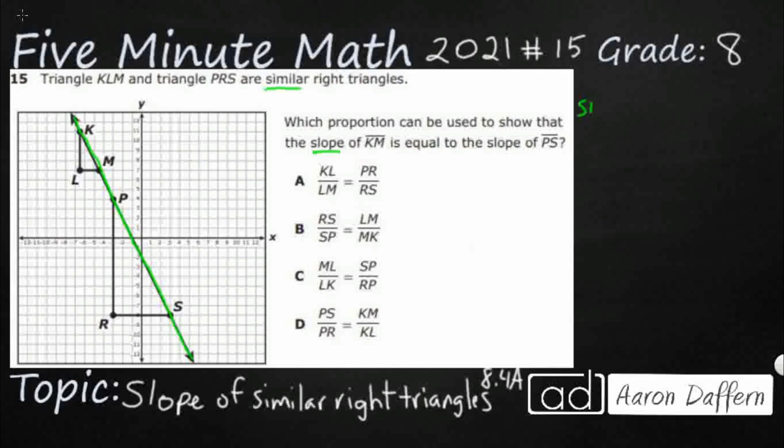Well the slope, remember our little saying is rise over run. So we know it's the change in Y over the change in X. If you want to get technical, it's your two Y coordinates subtracted from each other, your two X coordinates subtracted from each other.